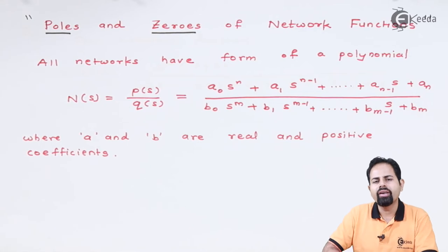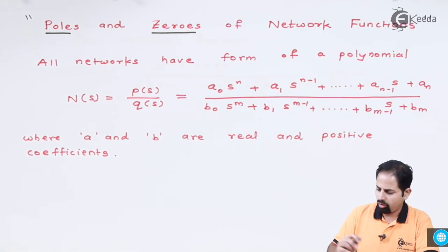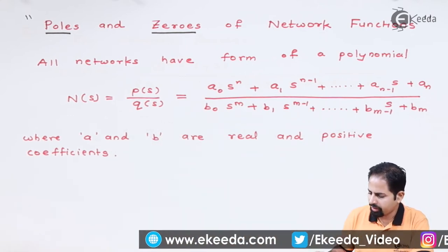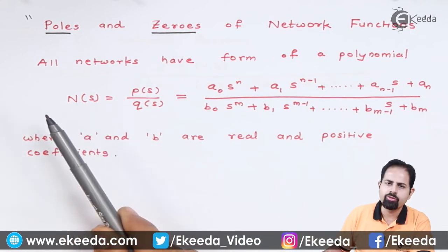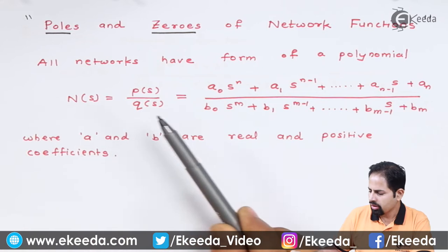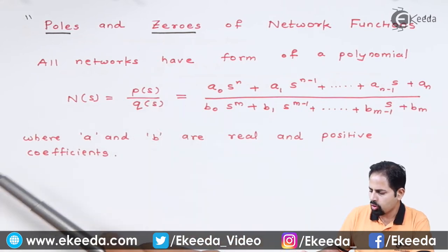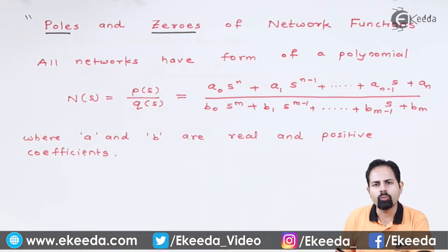In general, all the networks that we have seen till now have this particular format which I have written here. N(s) means you can see a network function which is P(s) upon Q(s). P(s) is numerator polynomial, Q(s) is denominator polynomial.